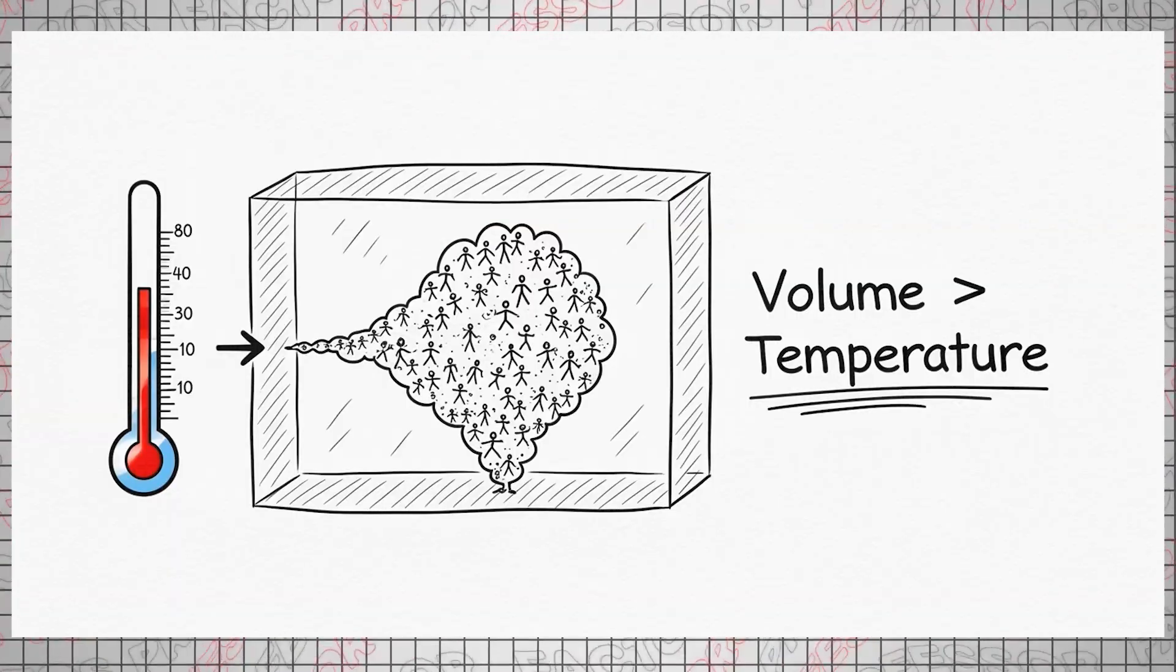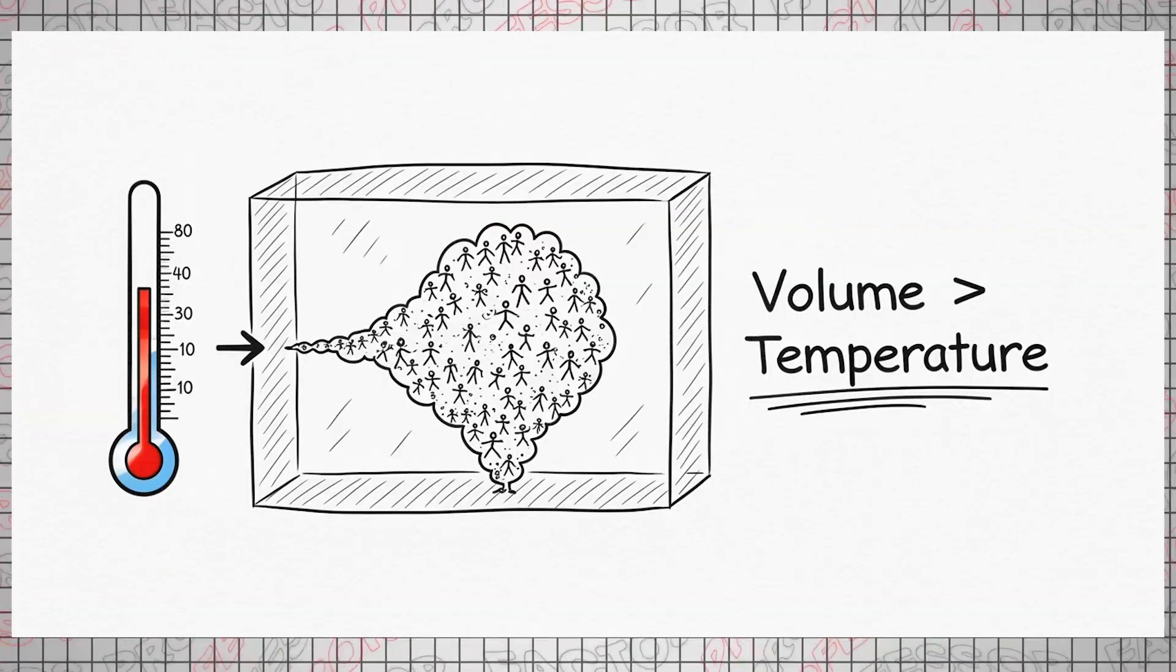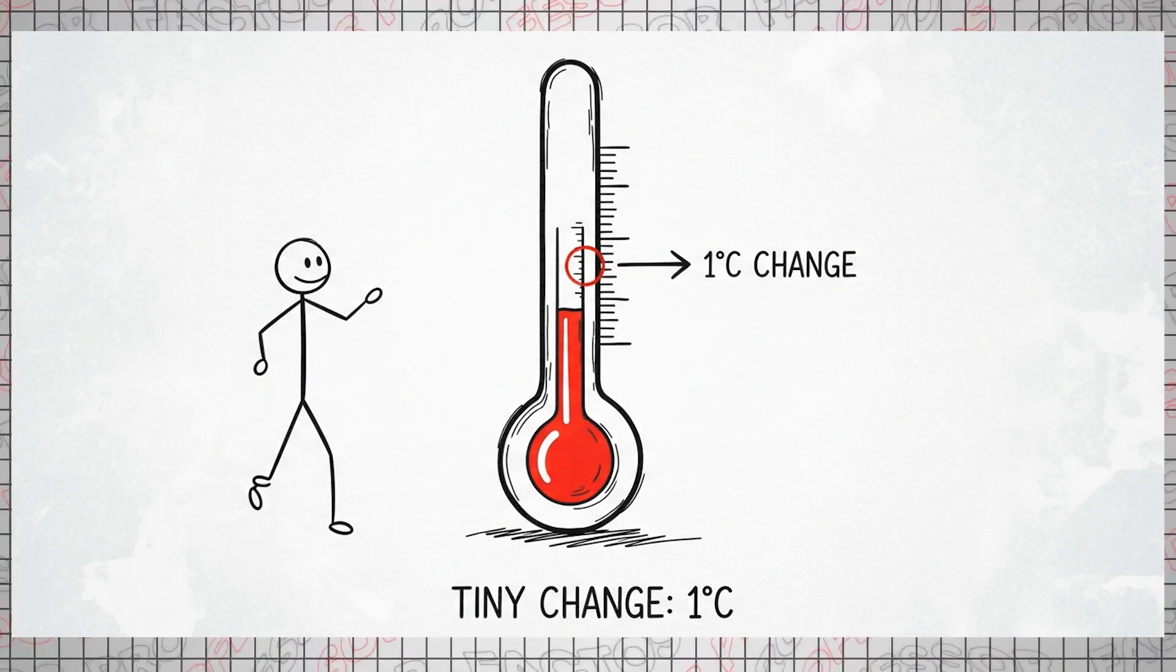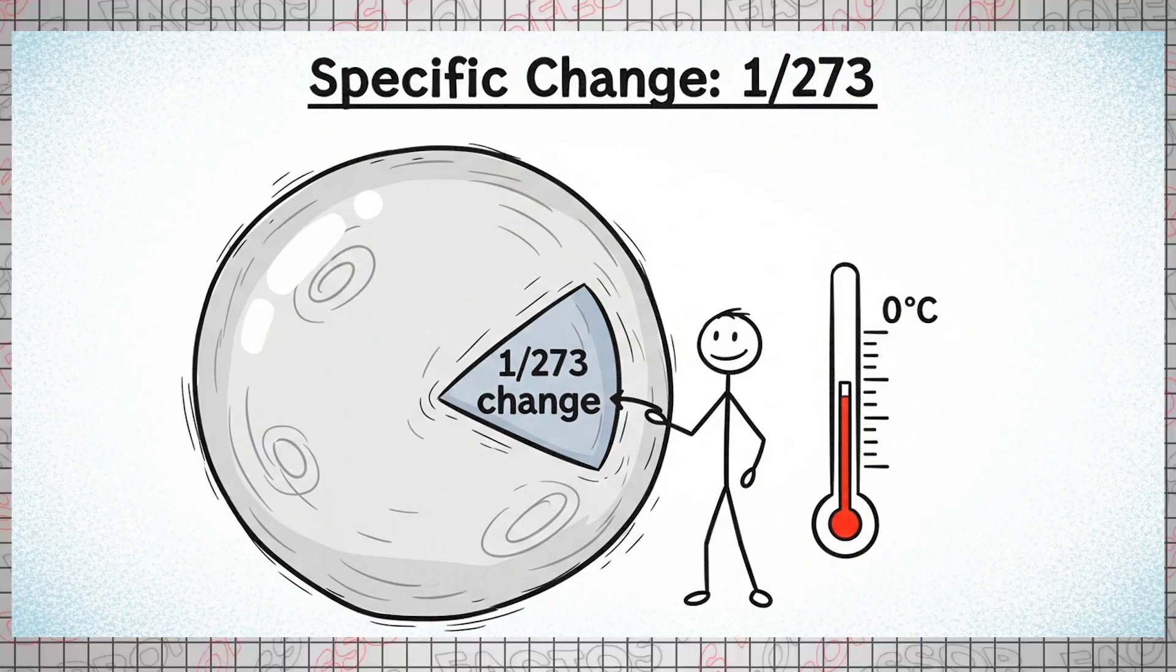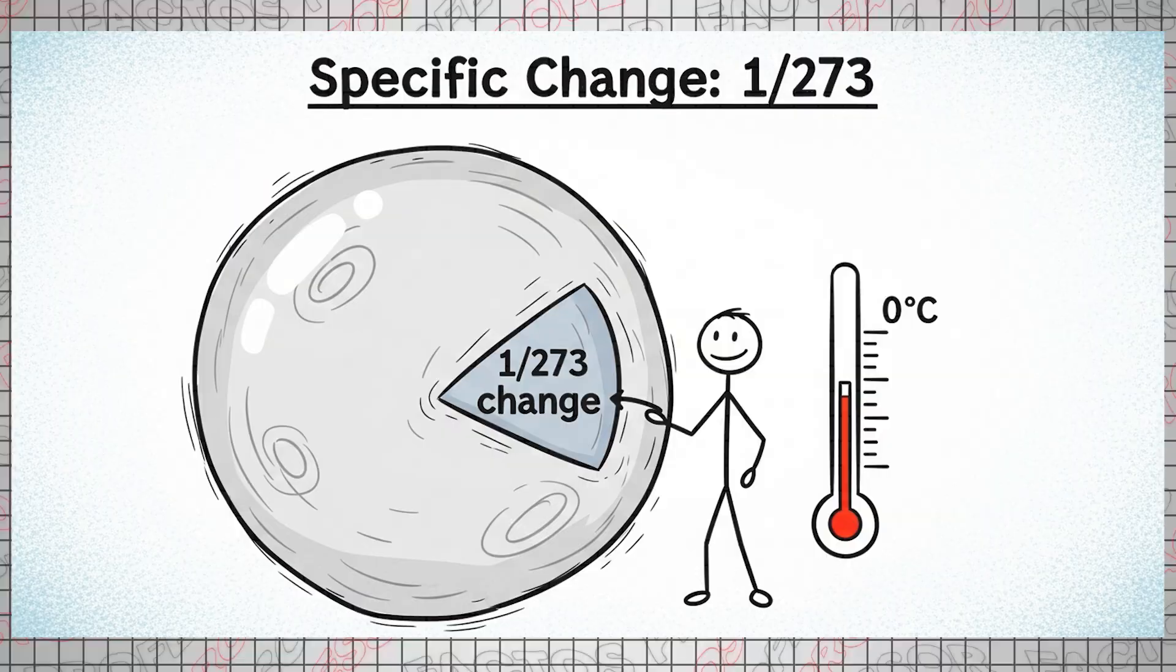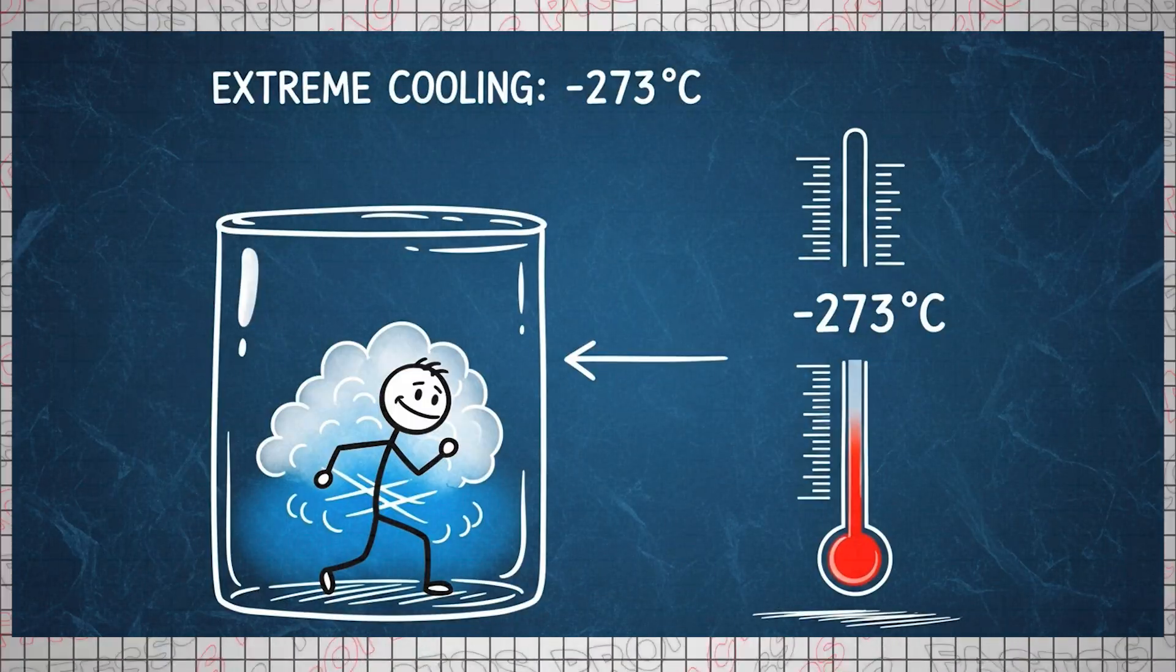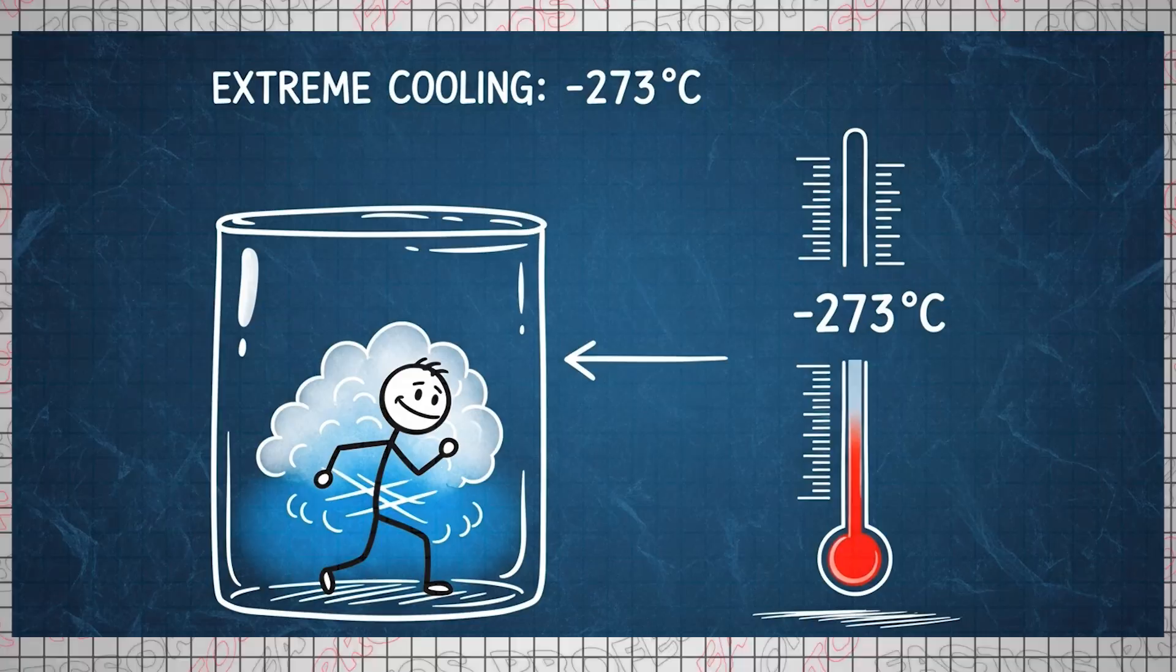In 1802, French chemist and physicist Joseph Gay-Lussac discovered that at constant pressure, the volume of a gas changes proportionally with temperature. Specifically, when the temperature changes by one degree Celsius, the volume of a gas changes by one two hundred seventy-third of its volume at zero degrees Celsius.